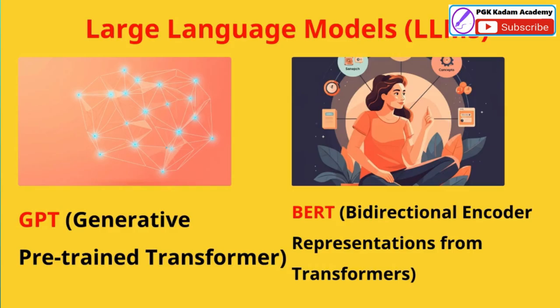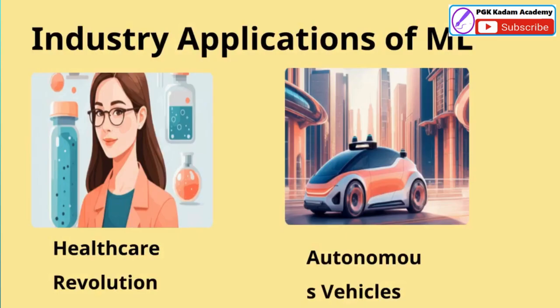The healthcare industry is being revolutionized by ML algorithms that can detect breast cancer with 95% accuracy through mammogram analysis, a dramatic improvement over traditional methods. ML has also dramatically accelerated drug discovery timelines, reducing the process by 60%, which can lead to faster development of new life-saving treatments. In the autonomous vehicle space, Tesla and Waymo's ML-powered self-driving systems have accumulated over 20 billion miles of data, allowing them to continuously improve their capabilities. These ML-powered systems have also reduced vehicle failures by 40% through predictive maintenance, improving safety and reliability.